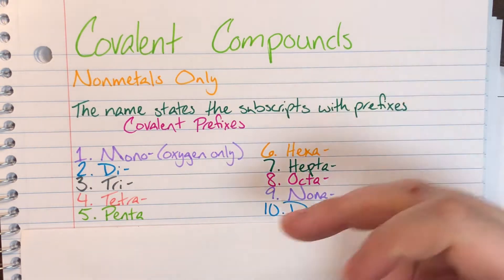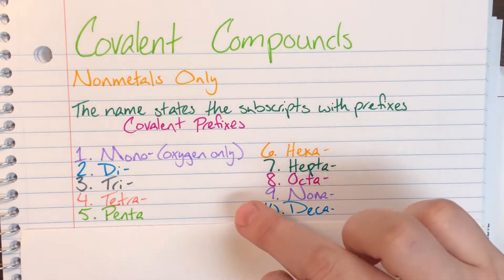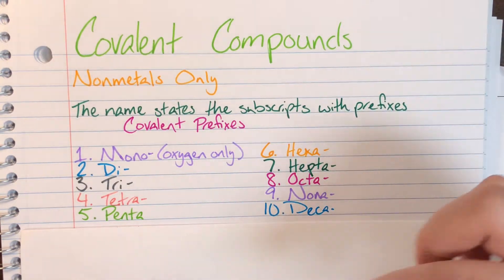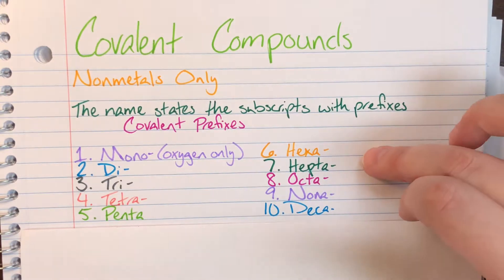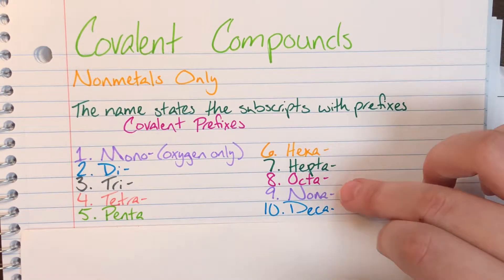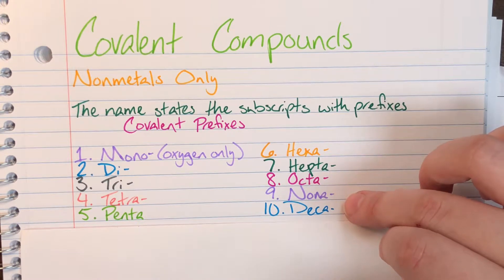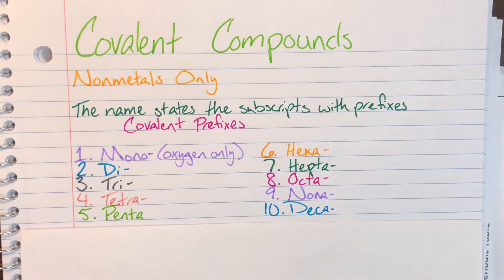For two we have di, three we have tri, four we have tetra, five we have penta, six we have hexa, seven we have hepta, eight we have octa, nine we have nona, and ten we have deca.